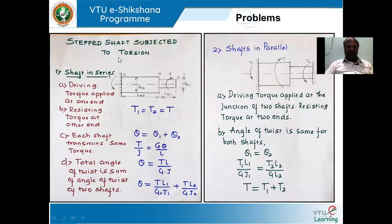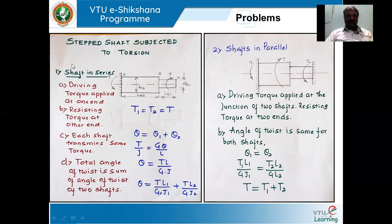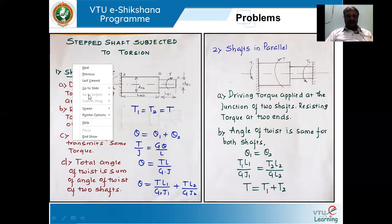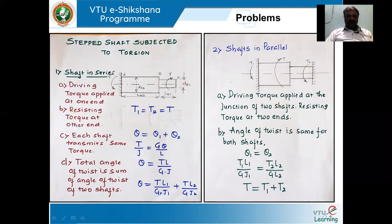There are two arrangements for stepped shafts: they may be connected in series or in parallel. In the first case — the shaft in series — the shaft has two diameters. One portion is AB having diameter D_AB, and the second part is BC having diameter D_BC — two diameters, two steps.